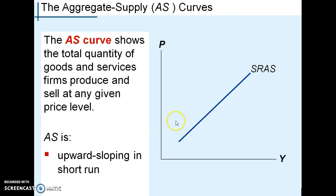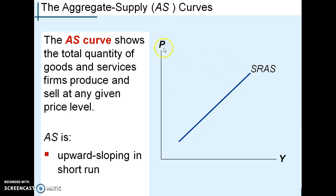The short-run is a typical supply curve. It tells you that as price levels rise in the short term, that can actually increase your quantity of aggregate supply. If price levels rising increases your quantity of aggregate supply, that tells you that in the short run, money is not neutral in your economy — it can actually affect your real production or real GDP.